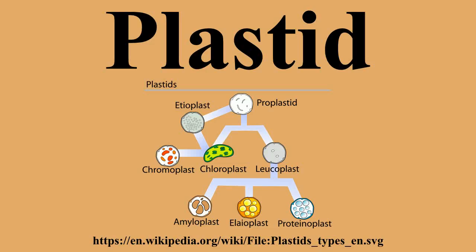Depending on the morphology and function, plastids have the ability to differentiate or re-differentiate between these and other forms. Each plastid creates multiple copies of a circular 75 to 250 kilobase plastome. The number of genome copies per plastid is variable, ranging from more than 1,000 in rapidly dividing cells, which in general contain few plastids, to 100 or fewer in mature cells, where plastid divisions have given rise to a large number of plastids.